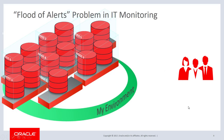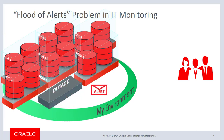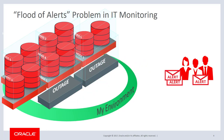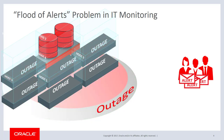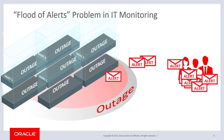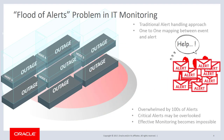In traditional IT monitoring, where there is a one-to-one mapping between event and alert, when one of your targets goes down, you get one alert. Then what happens when two of your targets go down because the host went down? You get two alerts. Then what if there is a site-wide outage and all of your targets go down? You get one alert from each monitored entity.